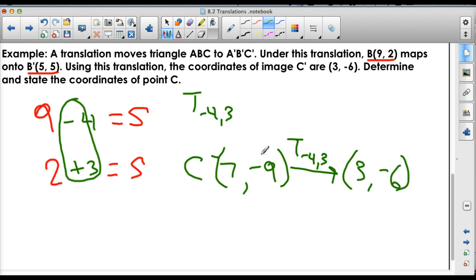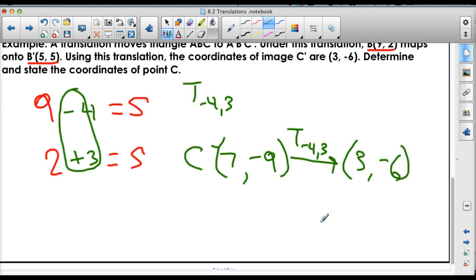Now, if you want to check your answer, see if the translation makes sense. I have to do 7 minus 4 gives us 3. Awesome. -9 plus 3 gives us -6. Also awesome. So if you get one of these where you have to go in the opposite direction, check it. Check it at the end. It's an easy check. Just do the translation. Make sure it makes sense. And you're good to go.